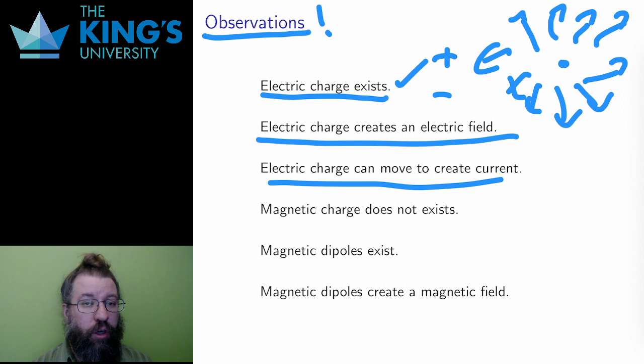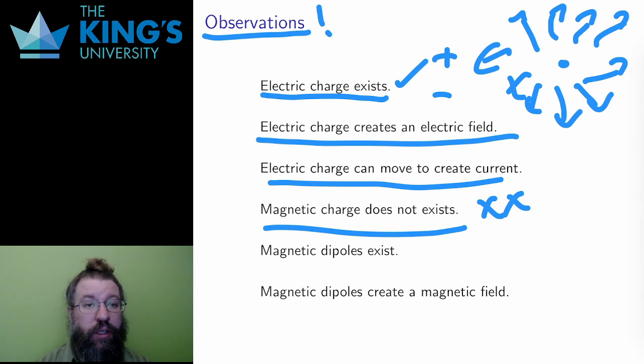Unlike electric charge, isolating magnetic charge is impossible. There is no such thing as an isolated positive or negative magnetic charge, which likewise implies that there is no such thing as a magnetic current. Instead, magnetic charge only appears in dipoles, objects that have a positive pole and a negative pole.